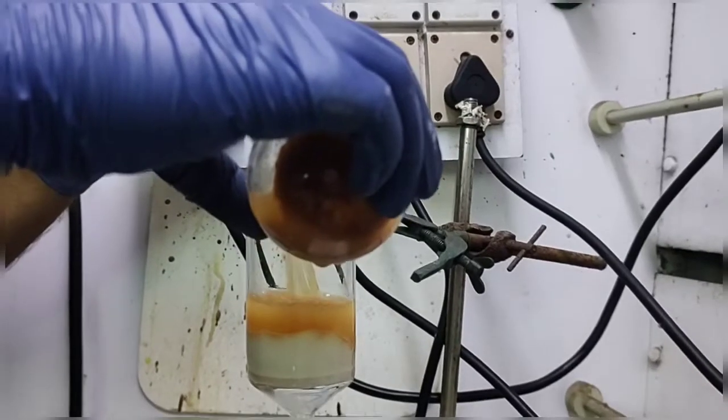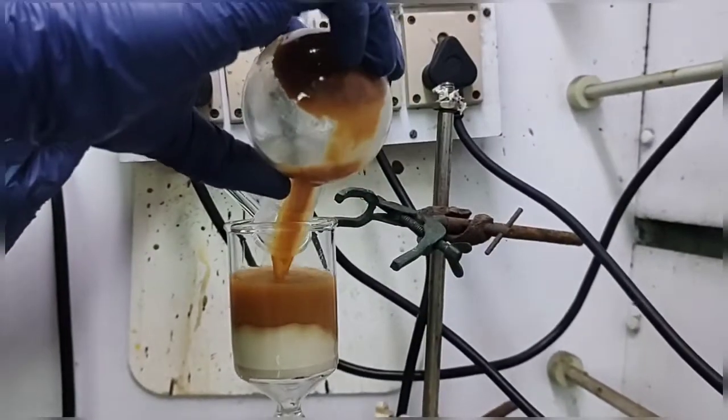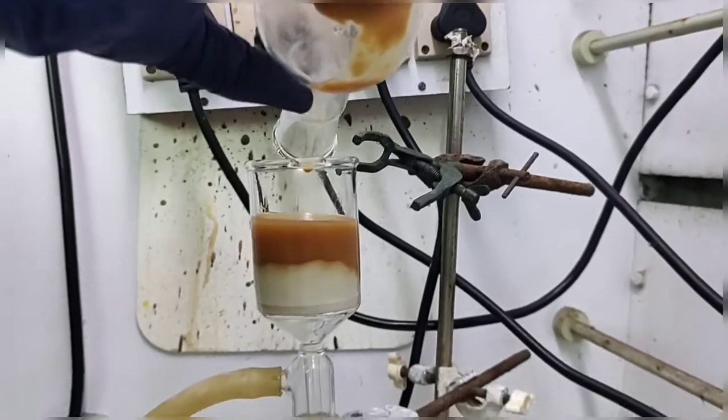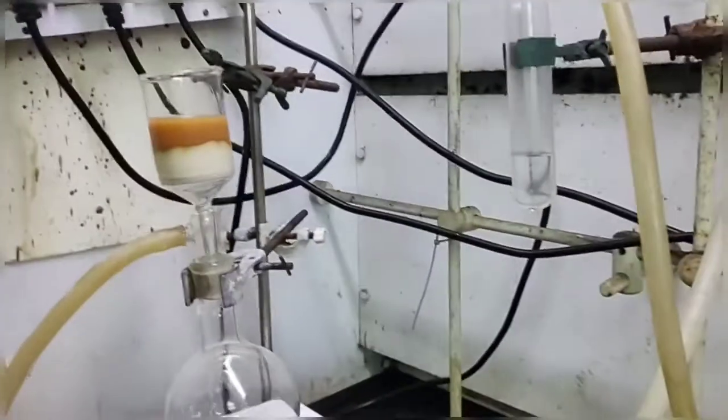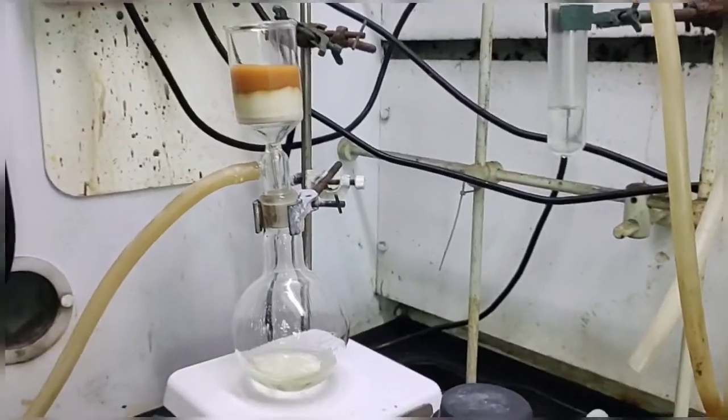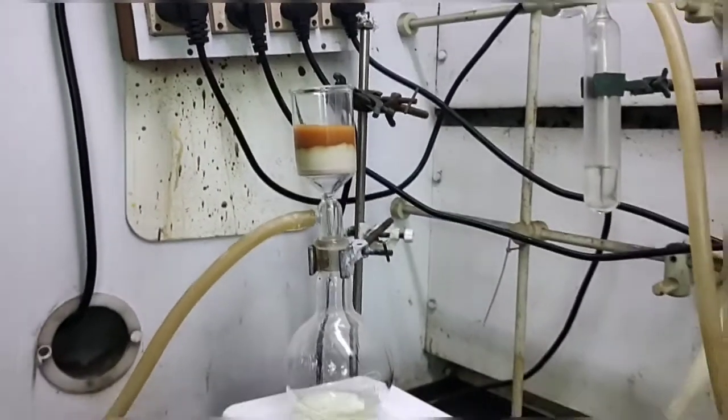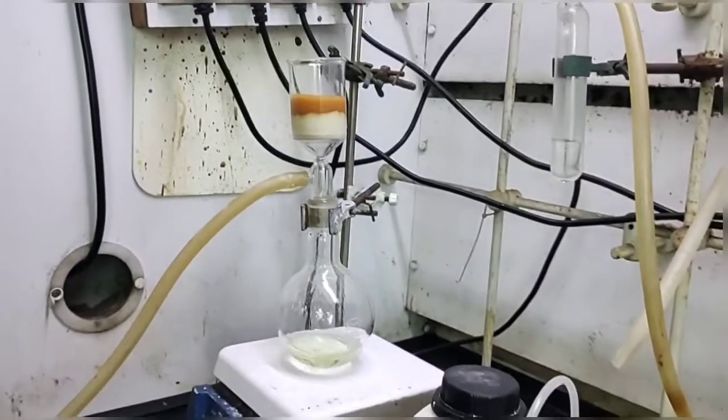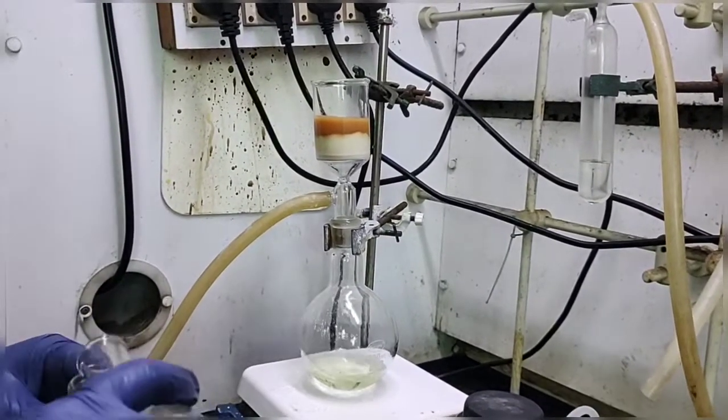Slowly we are pouring our reaction mixture into this sintered funnel and vacuum is being applied to it. You can see that the filtrate is coming down under the vacuum pressure and the filter is being stuck over the silite.